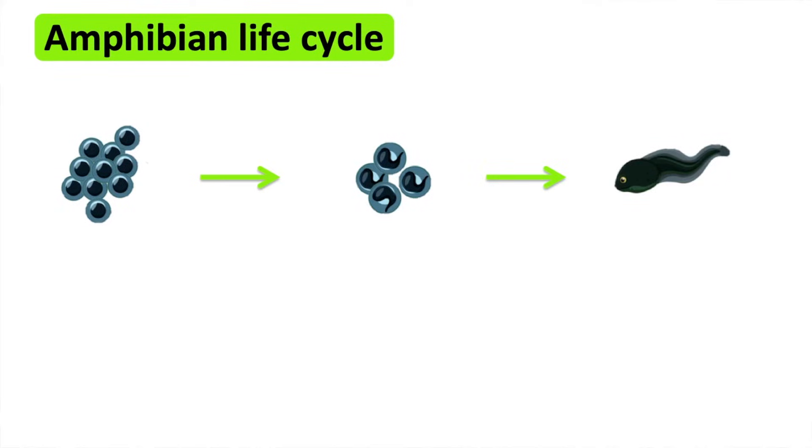Amphibian life cycle. First eggs are laid in the water. The amphibian begins to develop in the eggs. The amphibian hatches from the eggs and continues to grow and adapt in the water until they are adults.